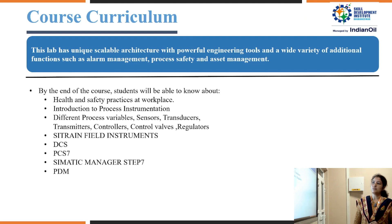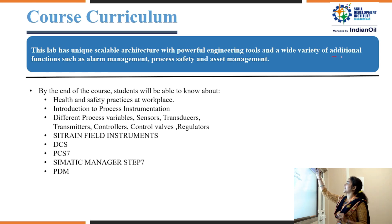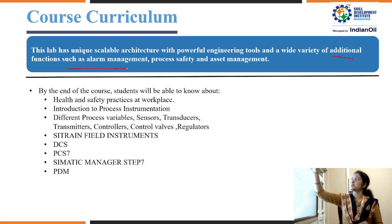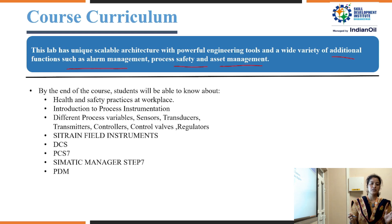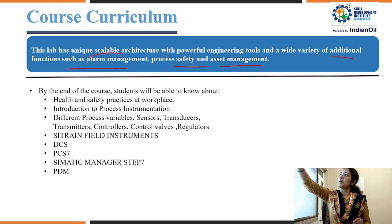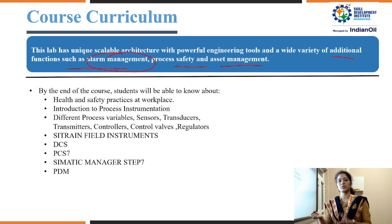The course curriculum is designed such that the lab has a unique, scalable architecture with powerful engineering tools and a wide variety of additional functions such as alarm management, process safety, and asset management. Generally, if hazards are going to happen in industry, there is a set of rules to stop them — this is carried out by alarm management, and we can see how that is done with the software.